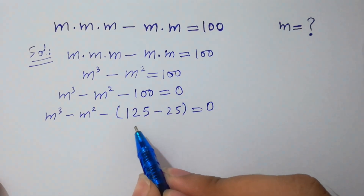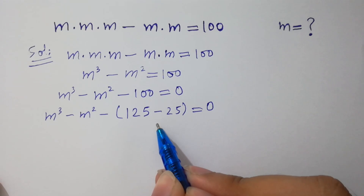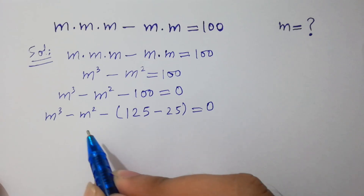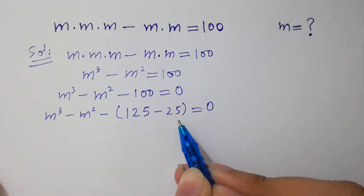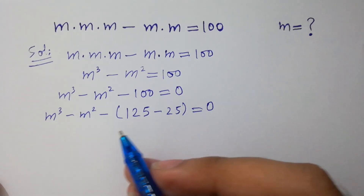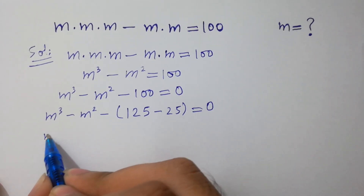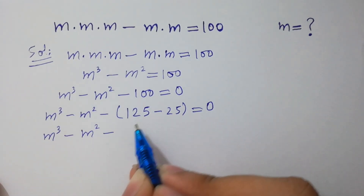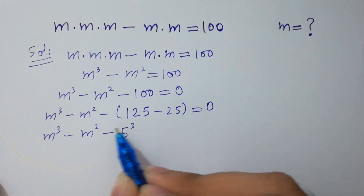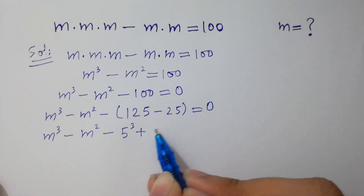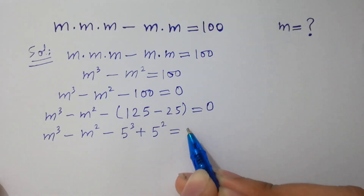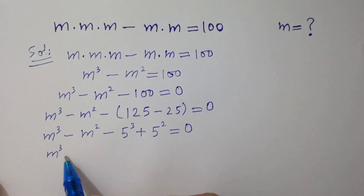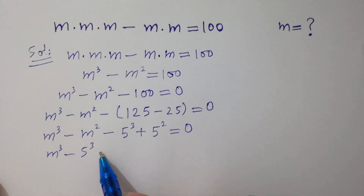I use 125 and 25 because there is M cube and 125 is 5 cube, and there is M square and 25 is 5 square. So M cube minus M square minus 125 plus 25 equals zero, which becomes M cube minus 5 cube minus M square minus 5 square.